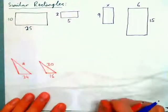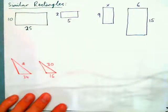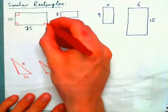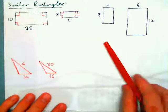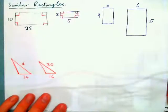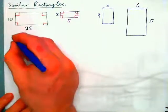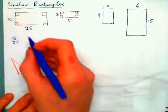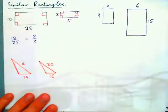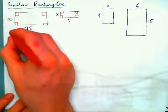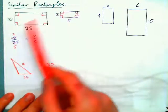Let's have a look at similar rectangles — it's the same idea as the triangles. With a rectangle, all corners are 90 degrees. If this rectangle is similar to this rectangle, we can see that 10 over 25, this length over this length, is equal to 2 over 5, this length over this length. Simplifying: 5 into 10 goes twice, 5 into 25 goes 5 times, so 2 fifths equals 2 fifths. These are similar rectangles.